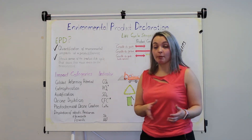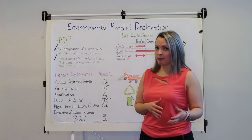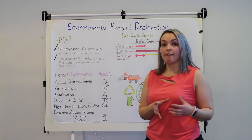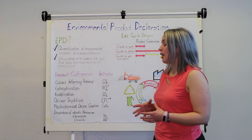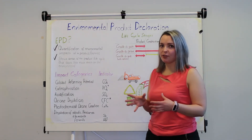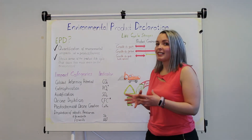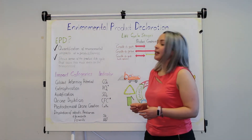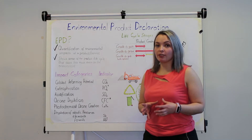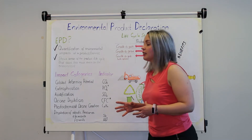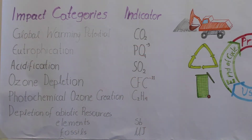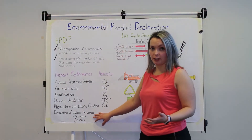Similar to using key performance indicators, known as KPIs, to evaluate the success of a business, we use indicators to evaluate the environmental impacts of a product. The impact categories considered in the life cycle assessment are the global warming potential, eutrophication, acidification, ozone depletion, photochemical ozone creation, and the depletion of abiotic resources for both elements and fossils.